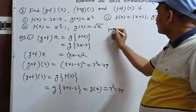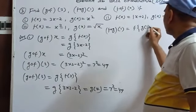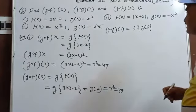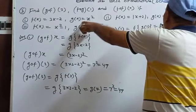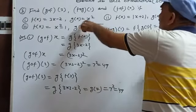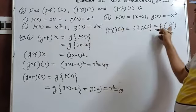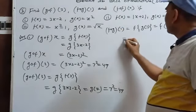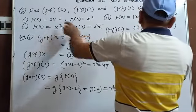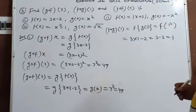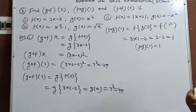fog(1)=f(g(1))=f(1²)=f(1)=3×1-2=1. So fog(1)=1.